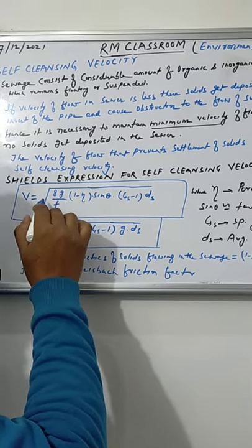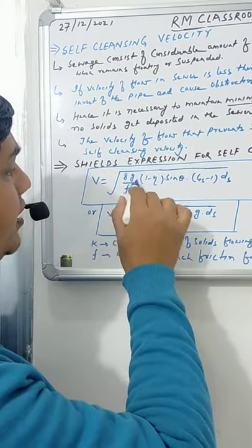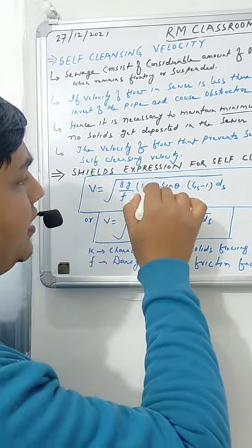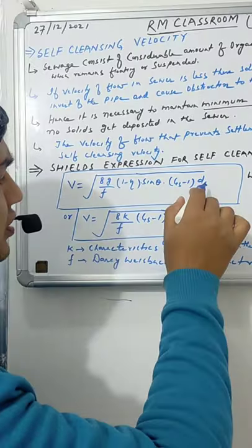As per Shields' expression, self cleansing velocity can be computed by this expression where g is the acceleration due to gravity, F is the Darcy-Weisbach friction factor, Eta is the porosity, Gs is the specific gravity of solid, and Ds is the average size of the solid.